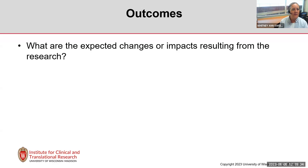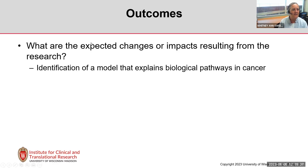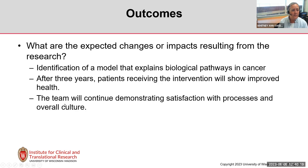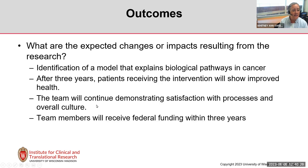Here are some examples of how to phrase outcomes: identification of a model that explains biological pathways in cancer; or more specifically, after three years, patients receiving the intervention will show improved health. The team will continue demonstrating satisfaction with processes and overall culture. Team members will receive federal funding within three years. Training will allow translational scientists to be more likely to receive tenure and promotion.